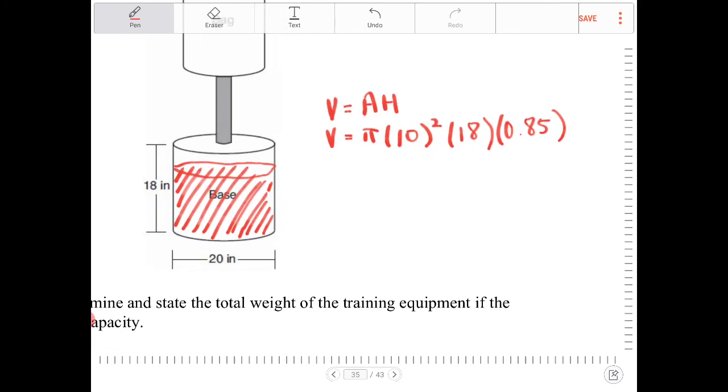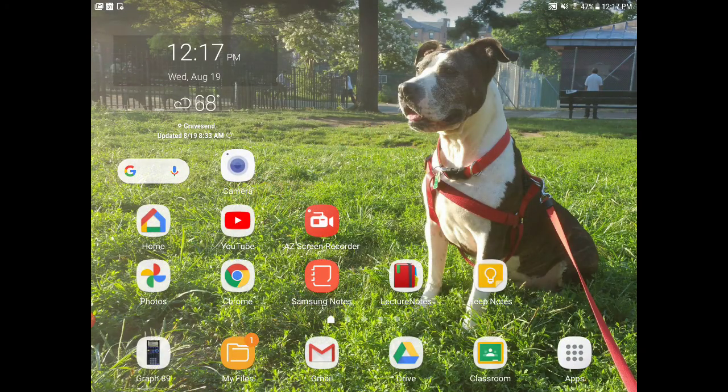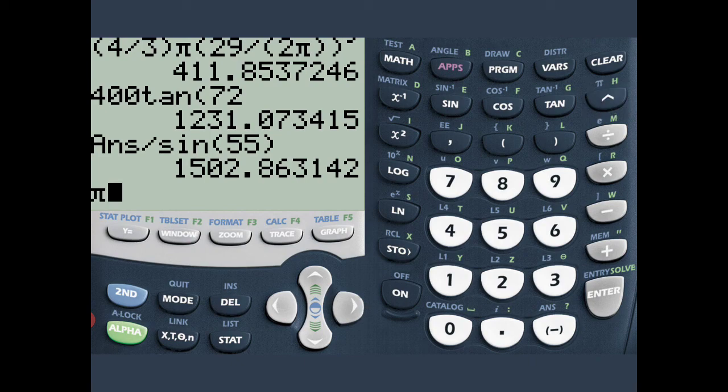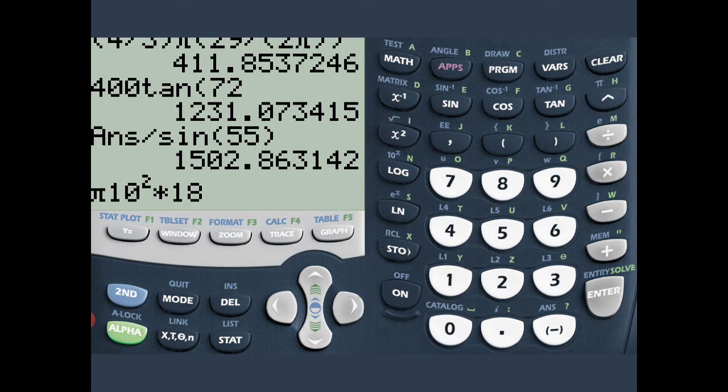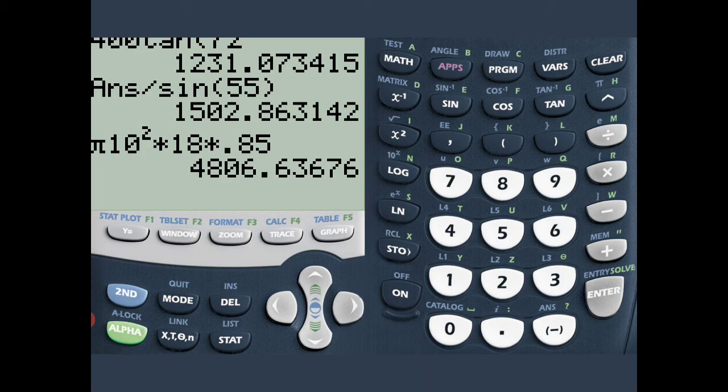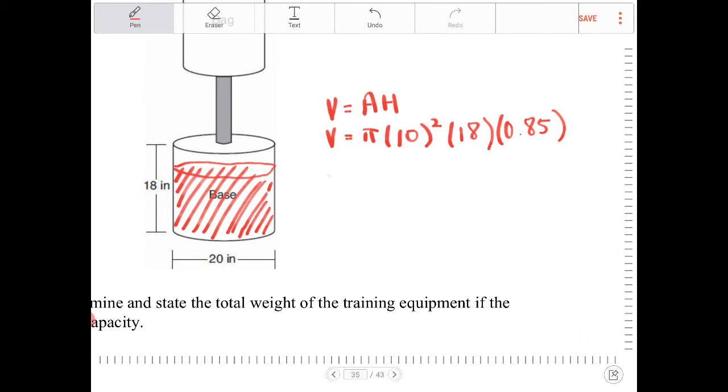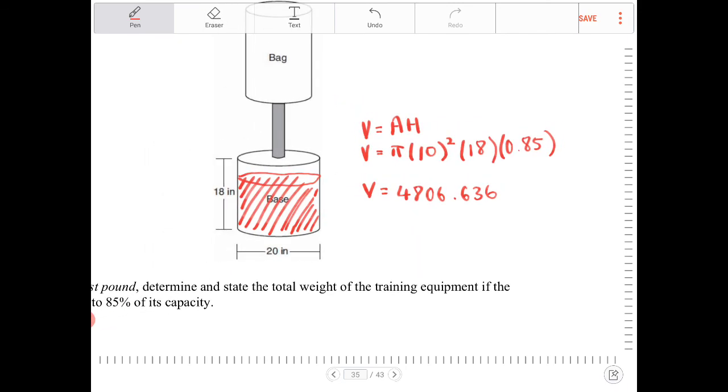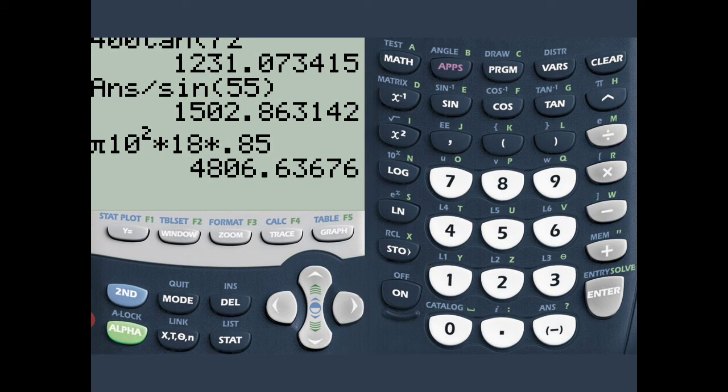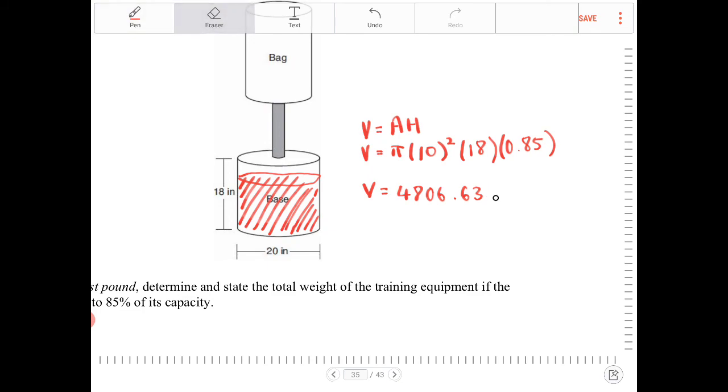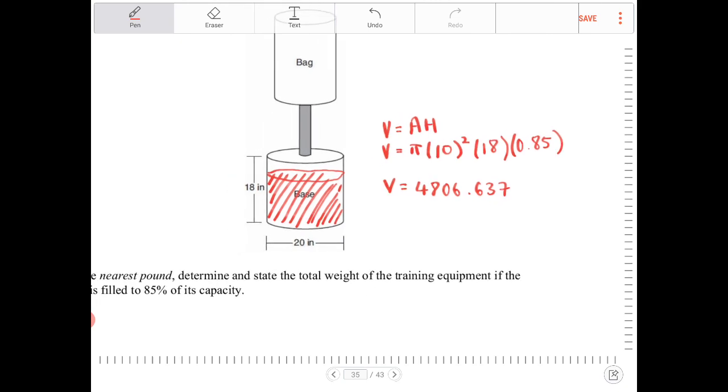So once we have the volume of the sand, we can then determine the weight of the sand that is going to be in there. Let's figure out what this actual volume is first. I am going to enter that into the calculator. So I have π times 10 squared times 18 times 0.85. So that would be 4806.636. So V is 4806.637. We are going to round at the end because the final answer requires us to round to the nearest pound. So the volume is this.